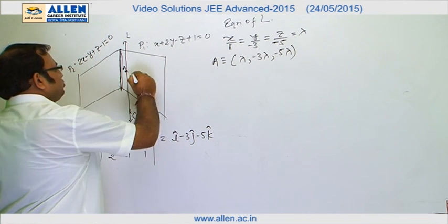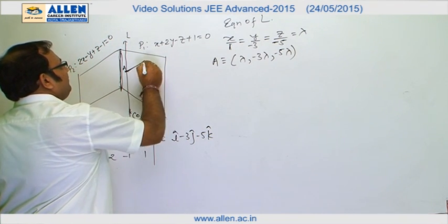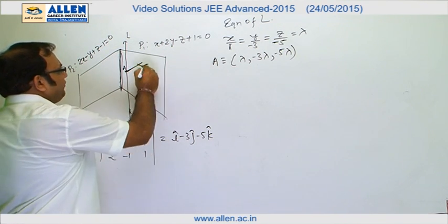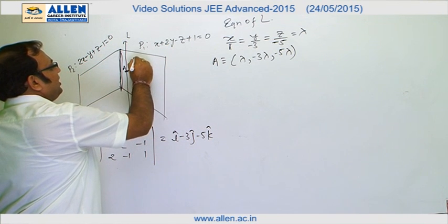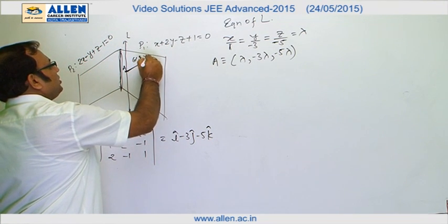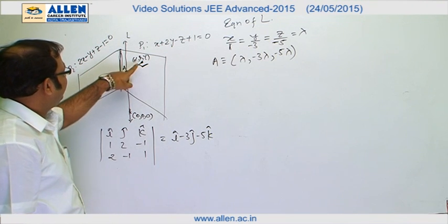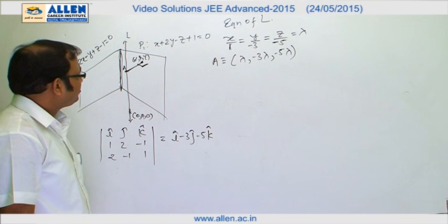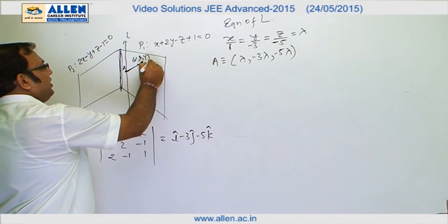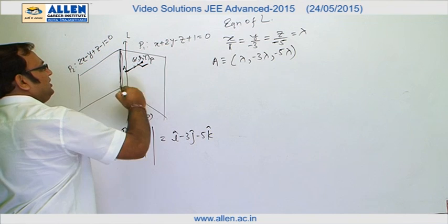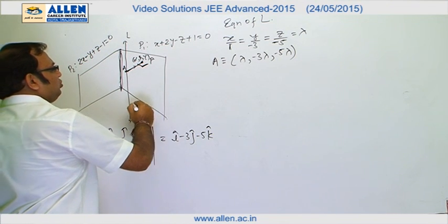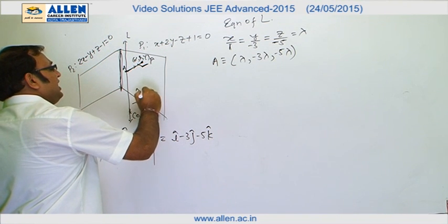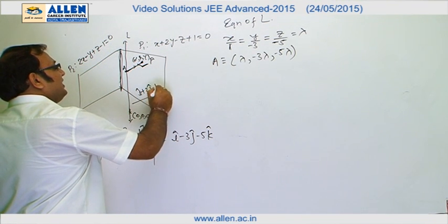The question further says that from this variable point A we drop a perpendicular onto plane P1, and the foot of the perpendicular, (α, β, γ), is our locus point. We have to find the equation for α, β, and γ. Let this foot be point P, so vector AP is parallel to the normal vector of plane P1.